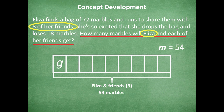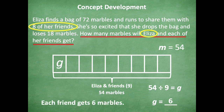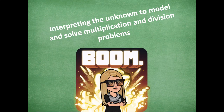Make sure to pause if you need more time. Here's the equation I came up with: 54 divided by 9 equals g. What did you come up with for g? G equals 6, because 54 divided by 9 equals 6. You can check your work by doing 9 times 6 to see if that equals 54. So each friend gets 6 marbles. Great job!